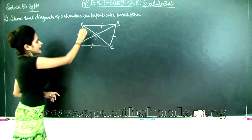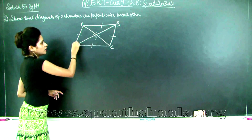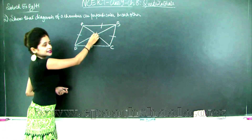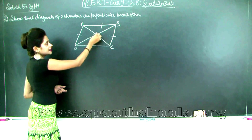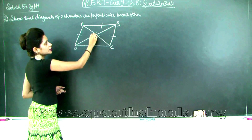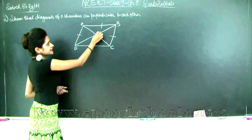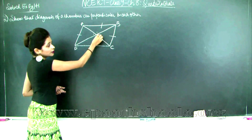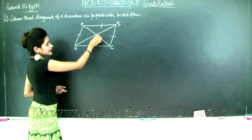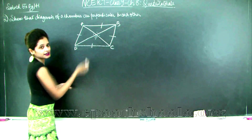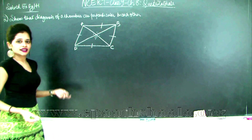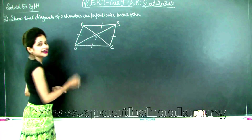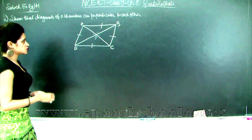It is sufficient to prove that angle AOD is 90 degrees. Why? Because if this angle is 90 degrees, then through the linear pair axiom we get the adjacent angle as 90 degrees. Once that is 90 degrees, the next angle is also 90 degrees through linear pair, and so on. So it is sufficient to prove that angle AOD is 90 degrees.